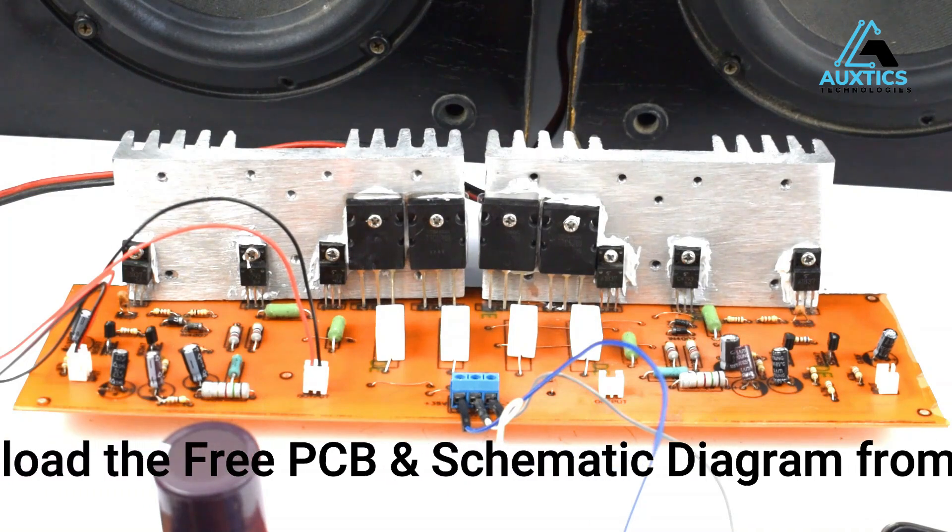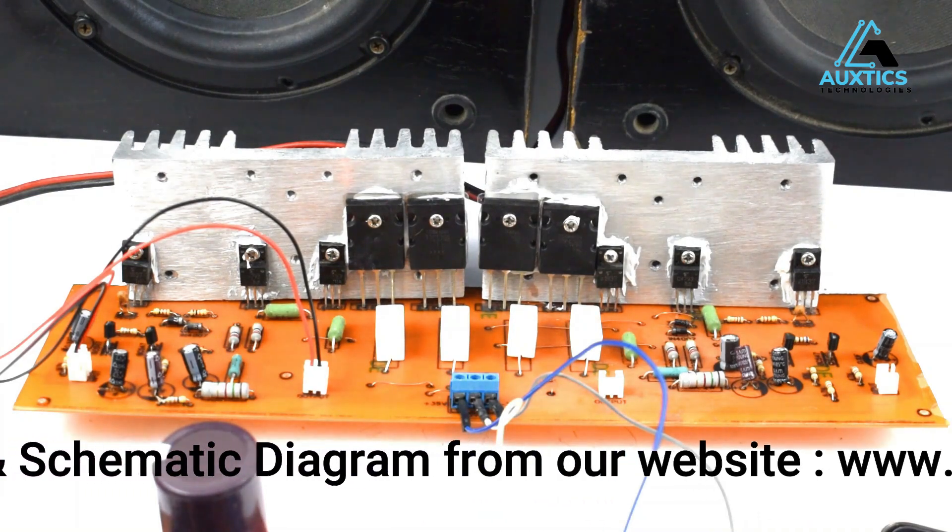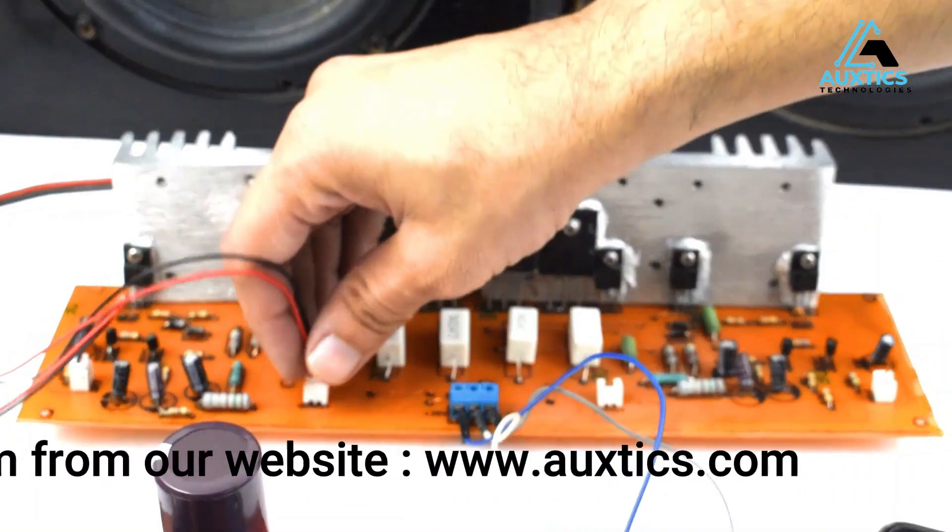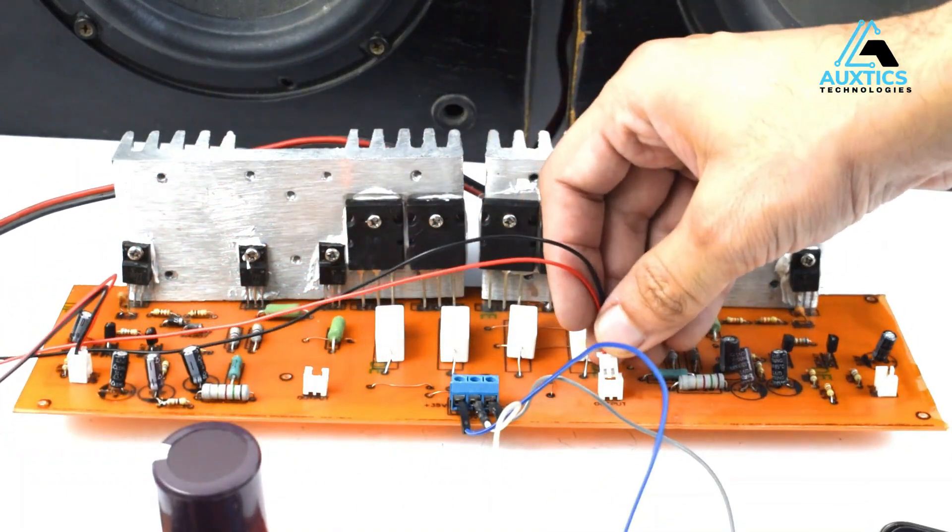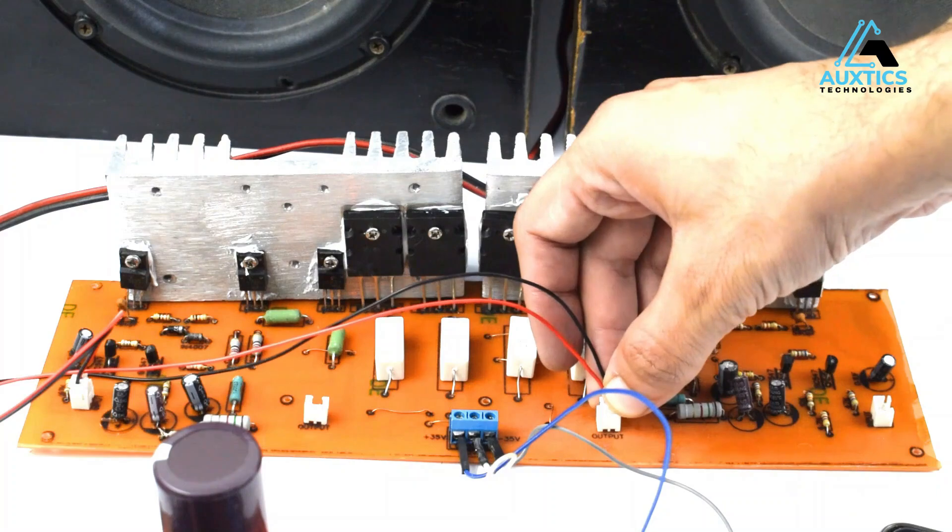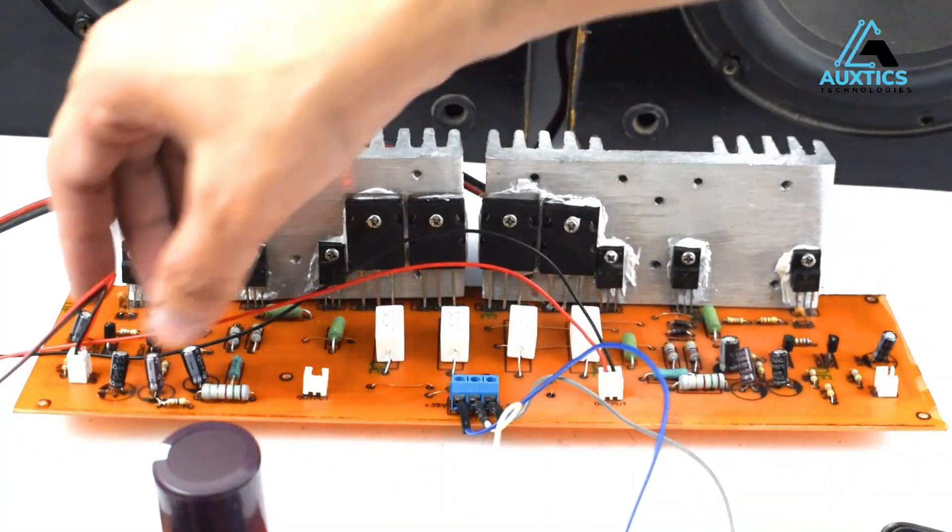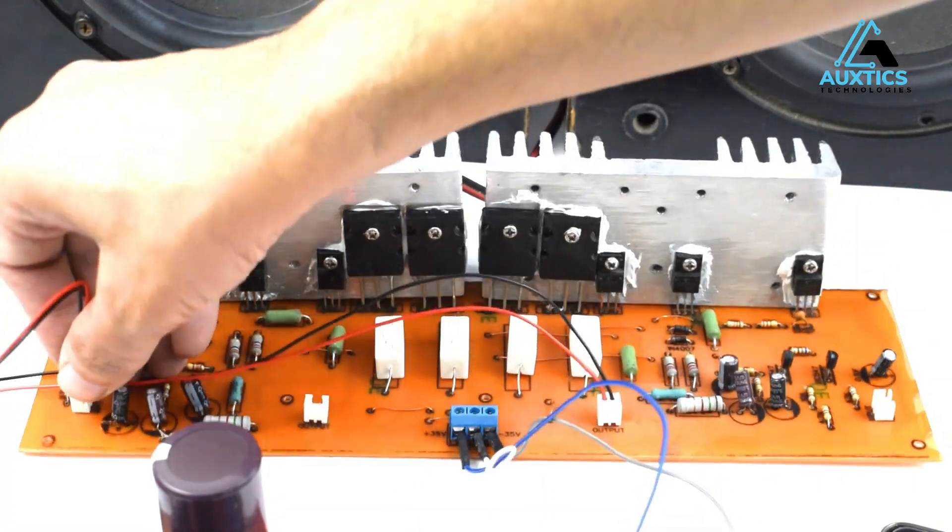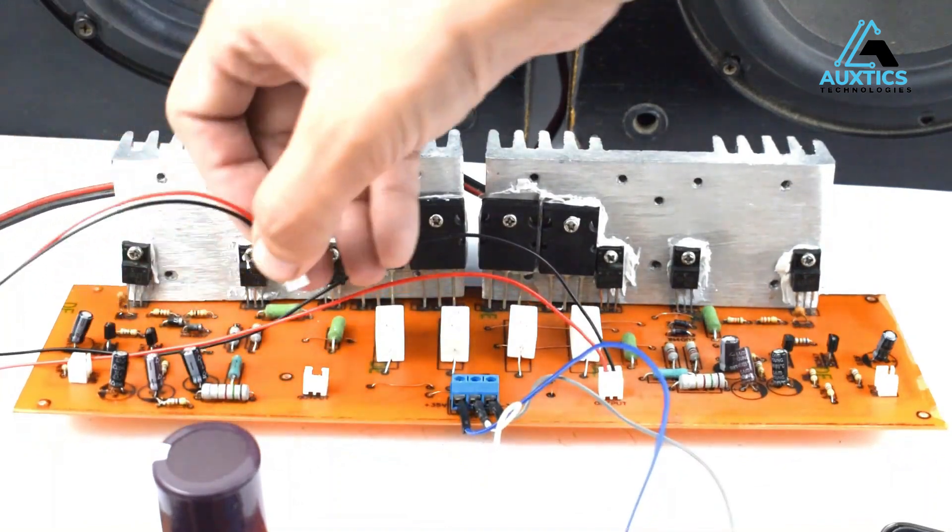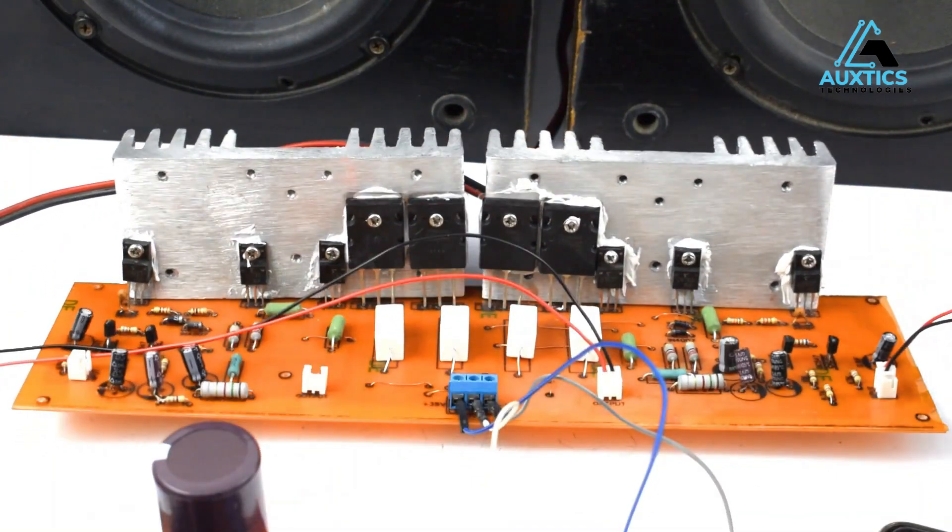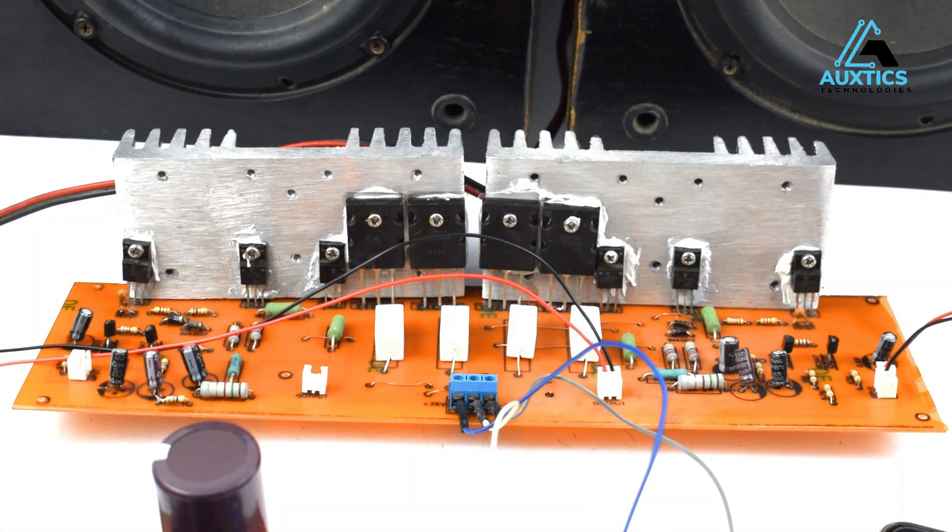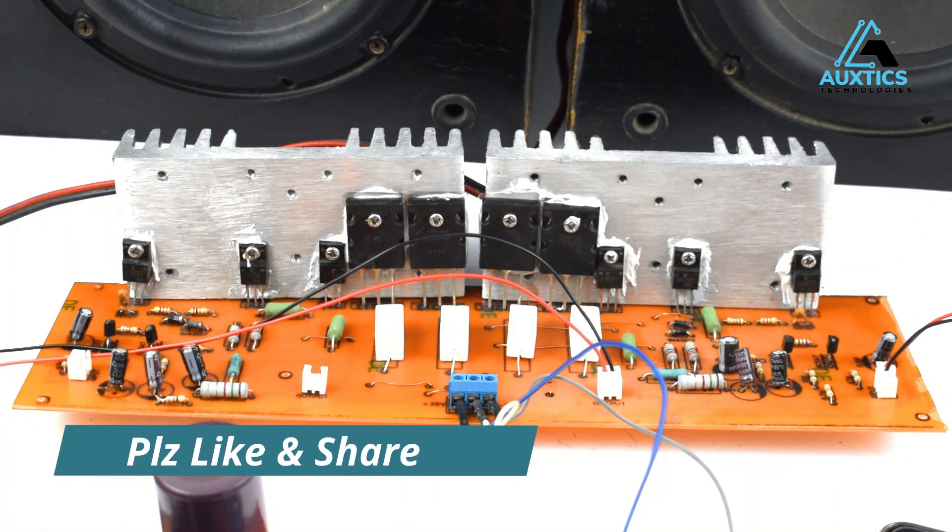Hello dear subscribers, welcome back to another video. In this video we will build this circuit. This is basically a Class A amplifier producing a total of 300 watts RMS and 150 watts RMS per channel. This circuit is totally a transistorized design, making it very robust. So let's start.